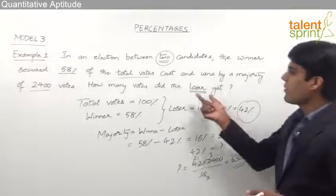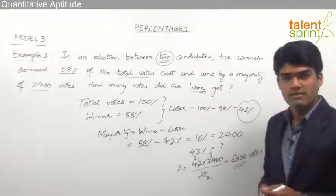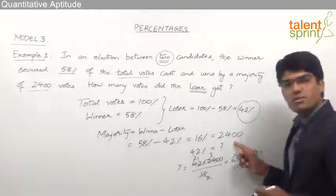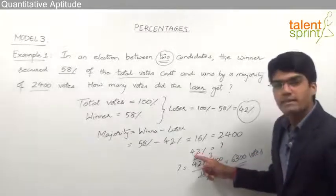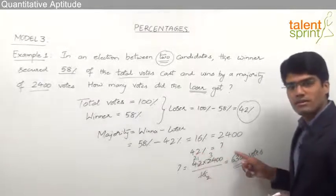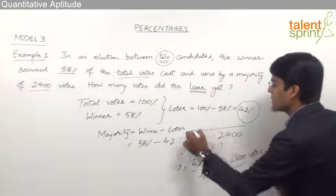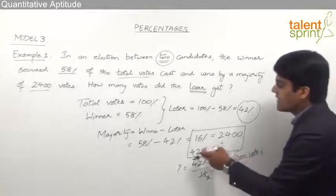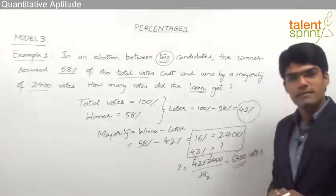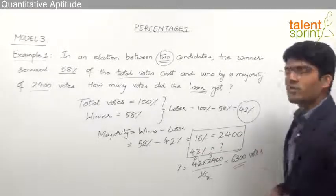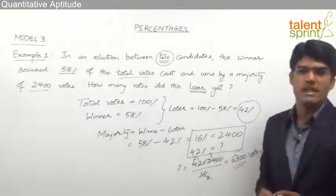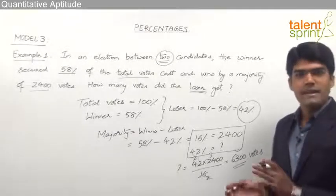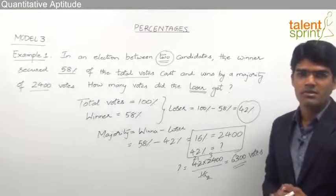Similarly, suppose the question asks for the total number of votes cast. We know that 16% is 2400 and the total number of votes is 100%. So 100% equals 100 × 2400 ÷ 16. This is how we solve election questions by considering the total number of votes as 100% and finding the shares of the winner and the loser respectively.